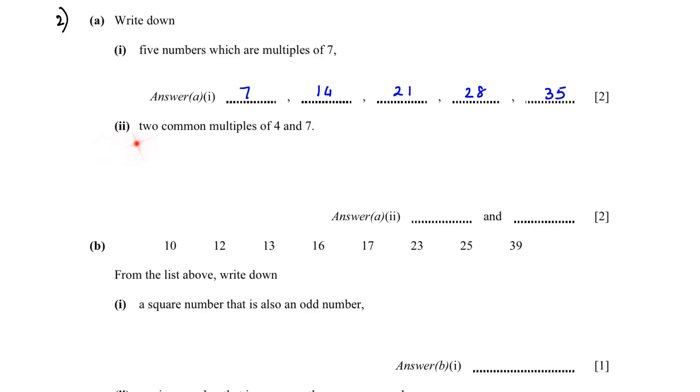A2. Two common multiples of 4 and 7. For the first multiple we can do 4 times 7 that will give us 28. For the second multiple you can multiply 4 by 2, so you will get 8, and multiply 8 by 7, 56. So the two multiples which are common to 4 and 7 are 28 and 56.